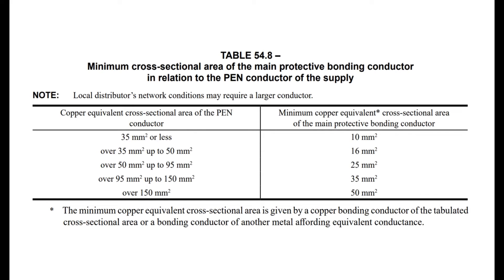Table 54.8 gives the following examples that you can select without calculation. And in a domestic environment, where most installations use 25mm squared meter tails, the main protective bonding conductor would be 10mm squared. And this is what people generally stick to.